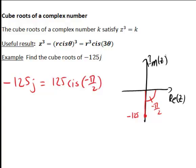Now the next step is we can use the useful result I referred to before, that z³, if the unknown cube roots are of the form r cis θ, will be r³ cis(3θ).